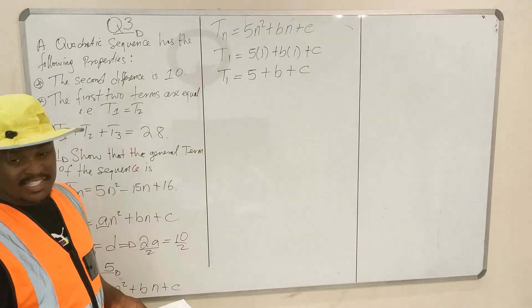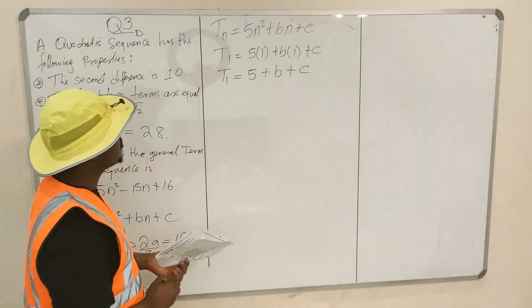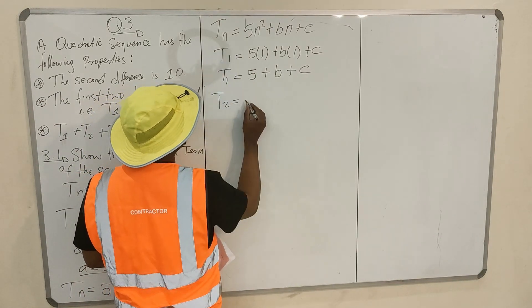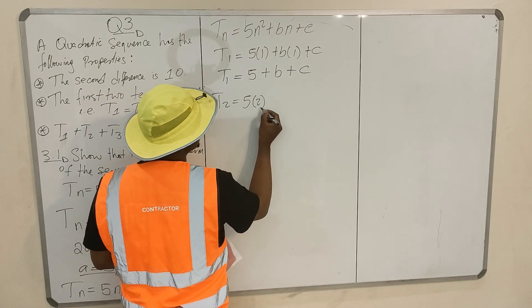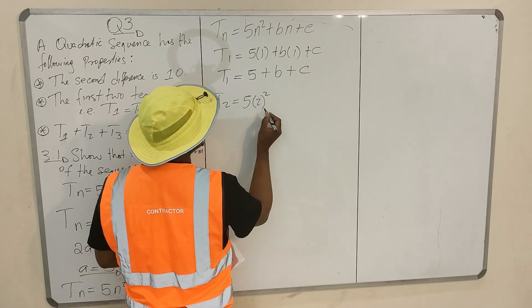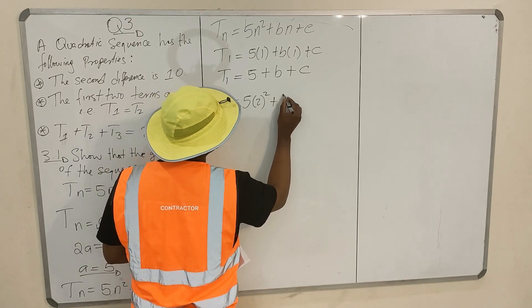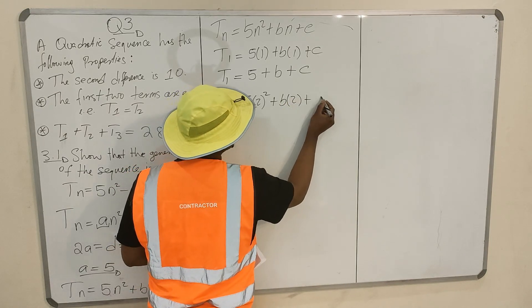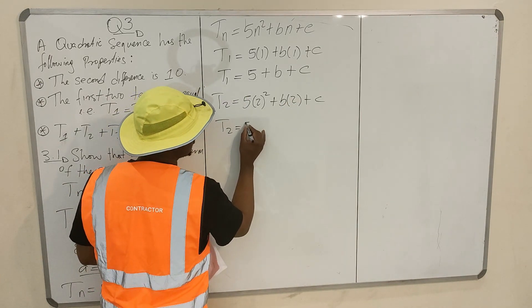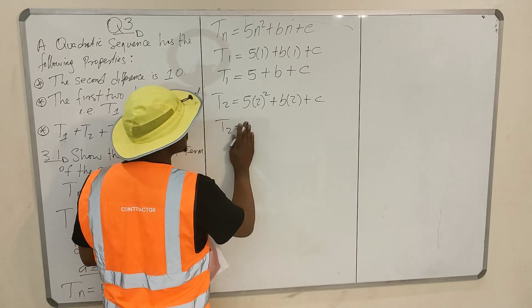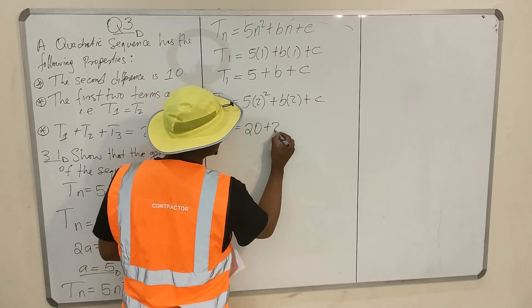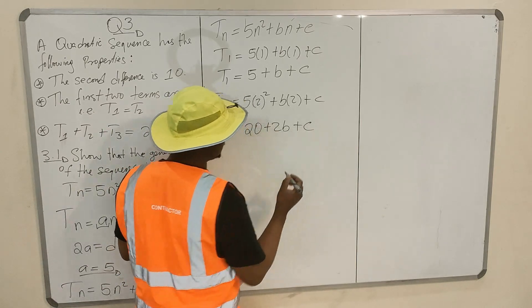Can you find T₂ as well? T₂ = 5(2)² + B(2) + C. This is 5 times 4, which is 20, plus 2B plus C.